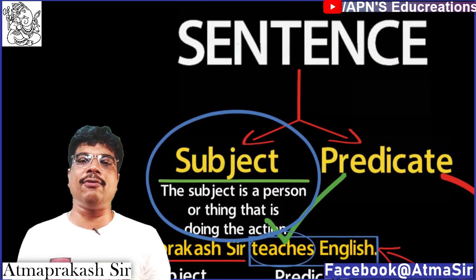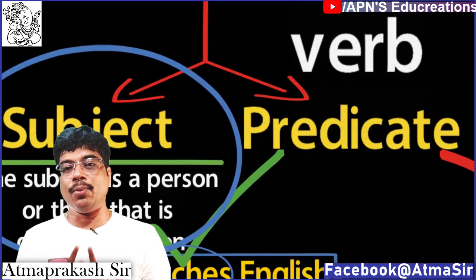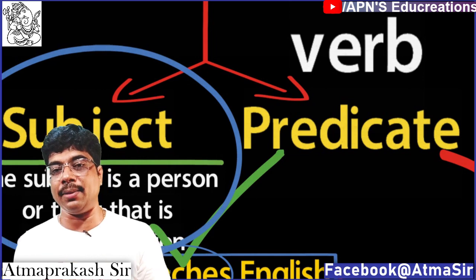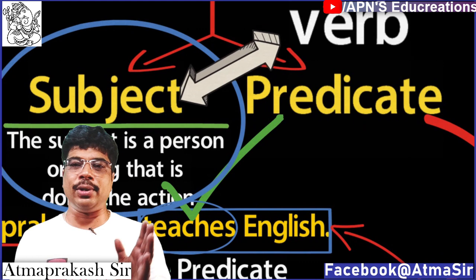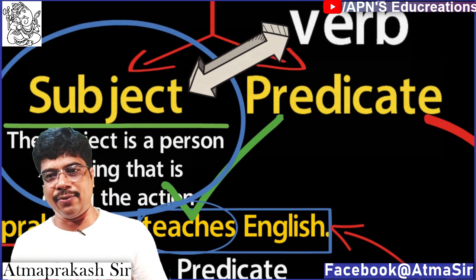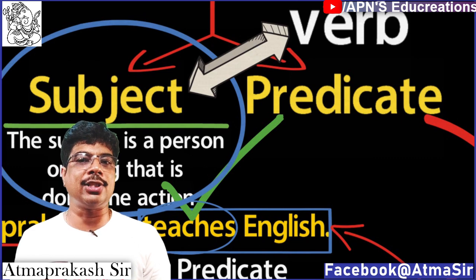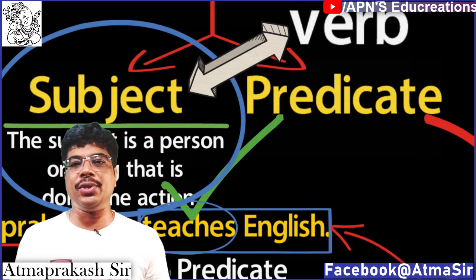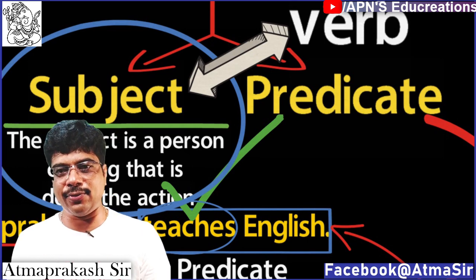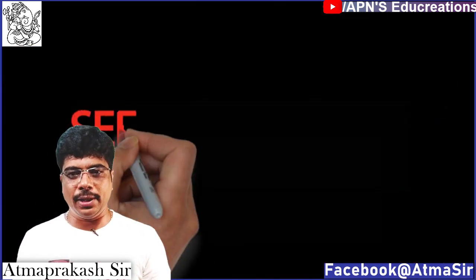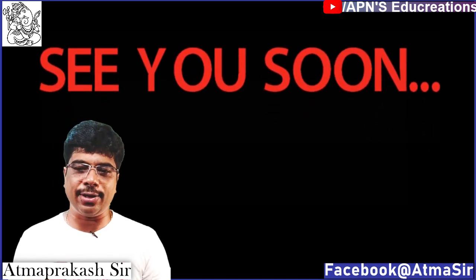Previously, I have already told you that the verb is the most important word in the predicate part. Now, the relationship between the subject and the verb, and what role agreement plays between them, will be taught in the next section of the video. Thank you very much.